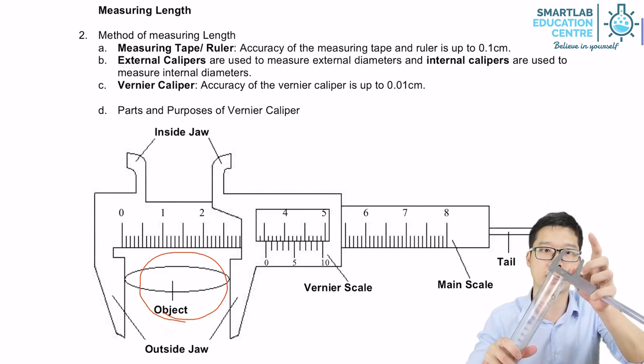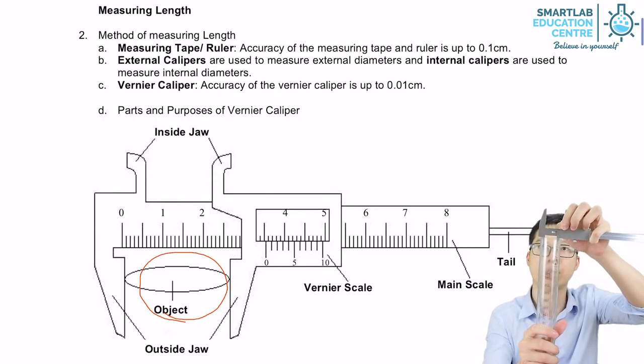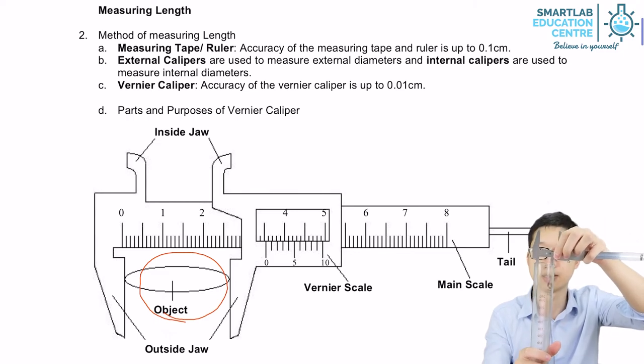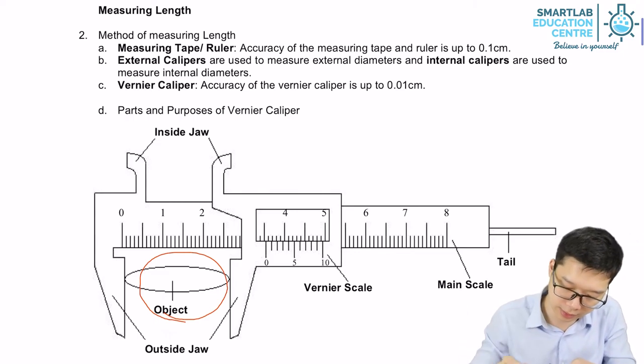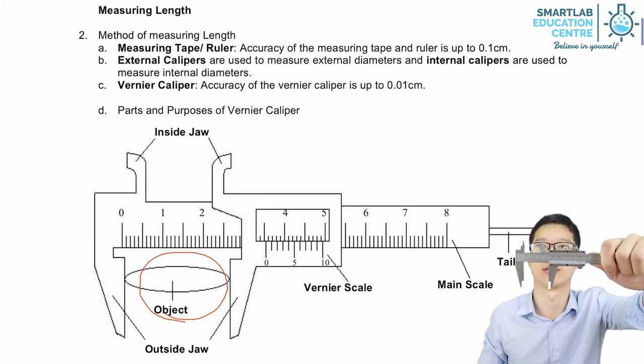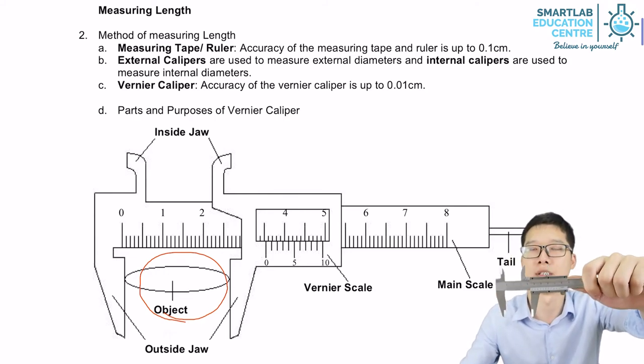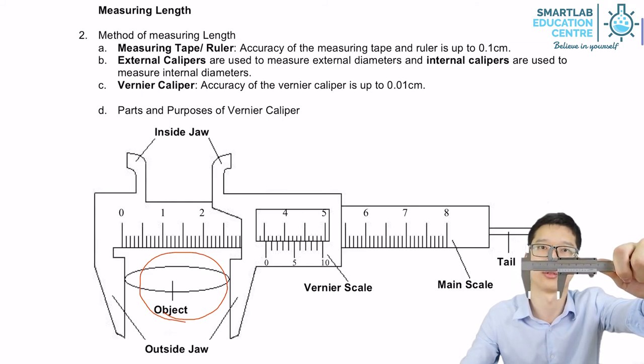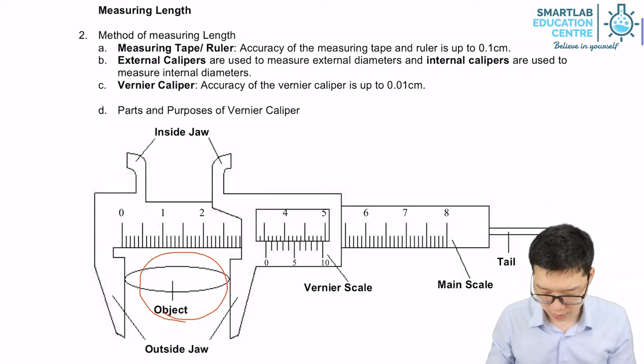Instead of clipping the tube, I use the internal jaws to measure in between. Similarly, I can tighten up and get my reading of the internal diameter of the measuring tube. So that's how we use it.